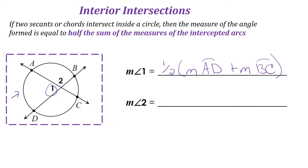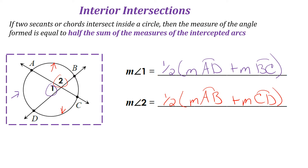You add the intercepted arcs together and take half of the sum. Similarly, the measure of angle 2 is one-half the measure of arc AB plus the measure of arc CD. We're going to use these rules to solve some problems.